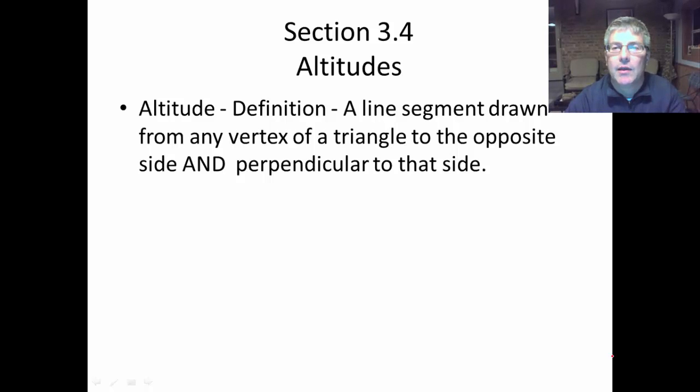An altitude is a line segment drawn from any vertex of a triangle to the opposite side, and it's perpendicular to that side. So if it's perpendicular, then it's going to form a right angle.